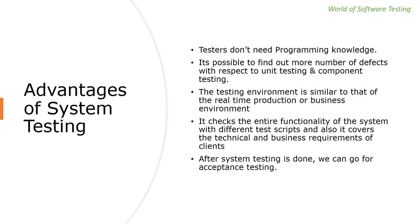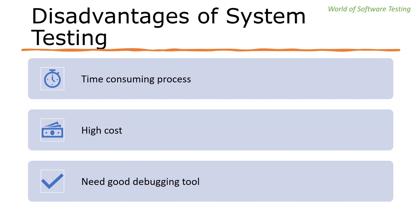After system testing, the product will have covered almost all possible bugs or errors, and the development team can confidently proceed with acceptance testing — the fourth level of testing. This is why system testing is very important to carry out before acceptance testing.